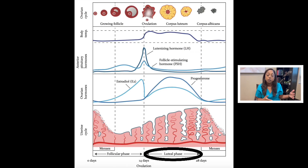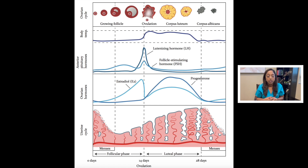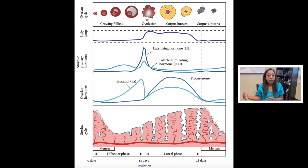In the follicular phase, the follicle is growing and the egg is maturing within it. Ovulation is the release of the egg, and then the luteal phase is the time frame between ovulation and the next period, and also the phase where implantation would occur.